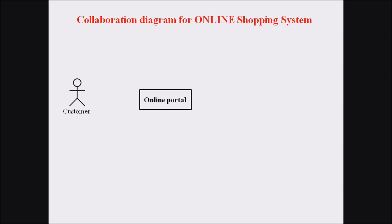The object online portal is represented using a rectangle symbol. There is a communication link between the customer and the portal, connected with a line. The message between the actor customer and the object online portal is login, and this message is labeled or numbered as one — the first message in the system.